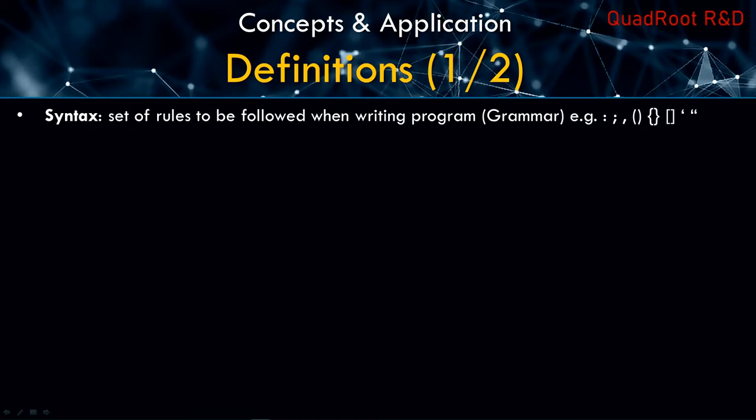The first thing is syntax. These are the set of rules to be followed when writing a program — it's the grammar of the language. For example: colon, semicolon, comma, round brackets, curly brackets, square brackets, single quote, double quote, and so on.